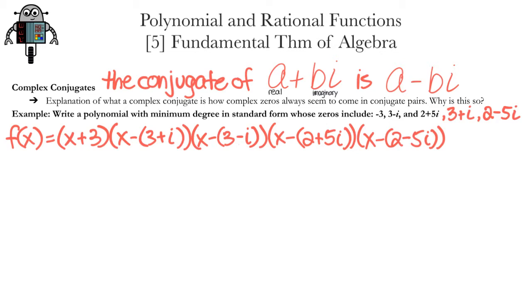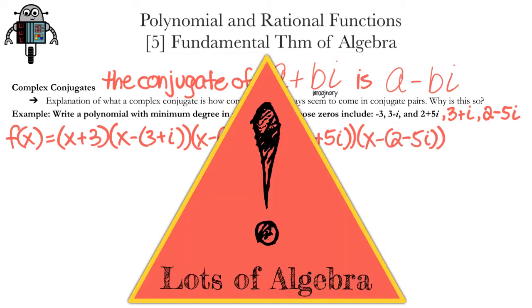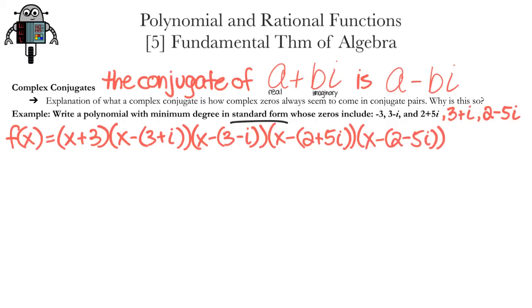That's the same as x minus negative 3, so the rest of the solutions will be written in that form. The next factor is x - (3 + i), then x - (3 - i). And the other two? x - (2 + 5i), x - (2 - 5i). That is the function in factored form, but our goal is to write it in standard form, so we need to multiply everything together. Warning, we're about to do a lot of algebra, but I'll share a few tips that will help us do that along the way.